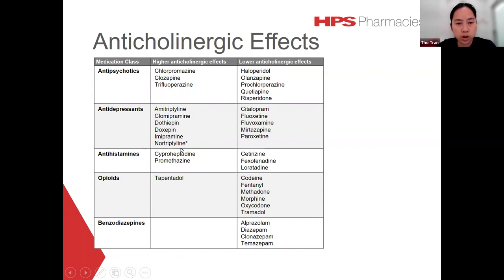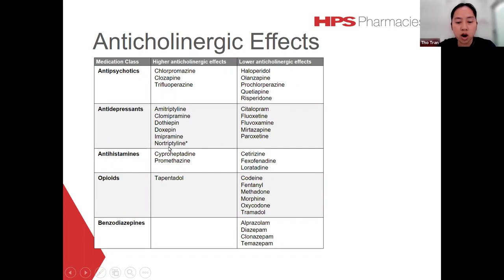For antidepressants, a number of agents listed here have high anticholinergic effects. Nortriptyline is associated with a lower incidence of anticholinergic effects compared to other tricyclic antidepressants. Citalopram has lower anticholinergic effects compared to tricyclic antidepressants, so it is the preferred drug of choice for antidepressants in the elderly. I've seen a lot of elderly patients on these medications.